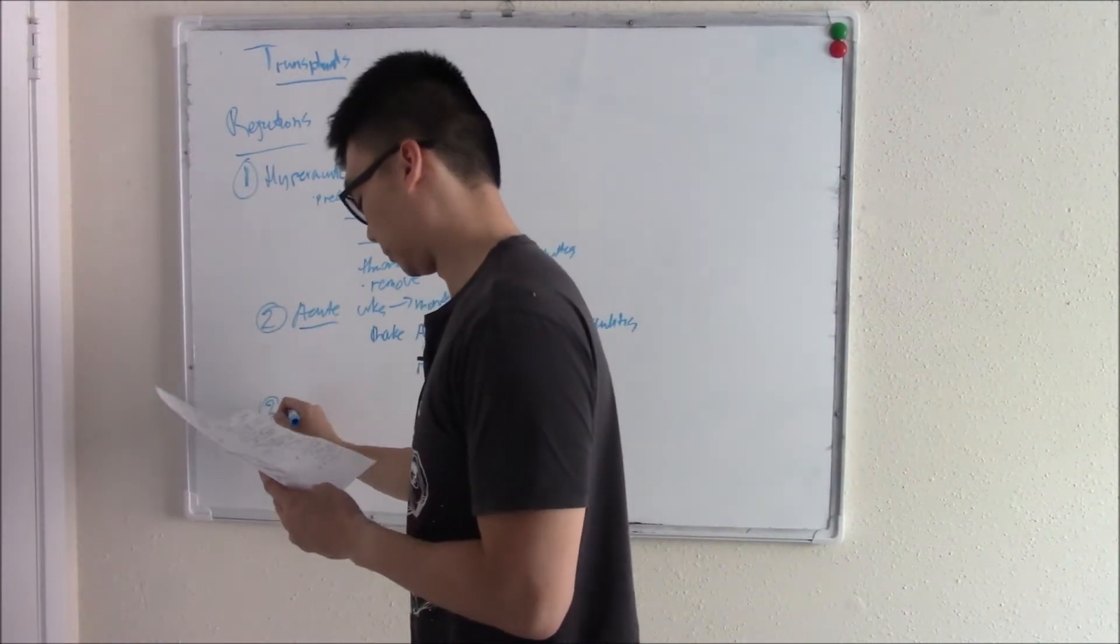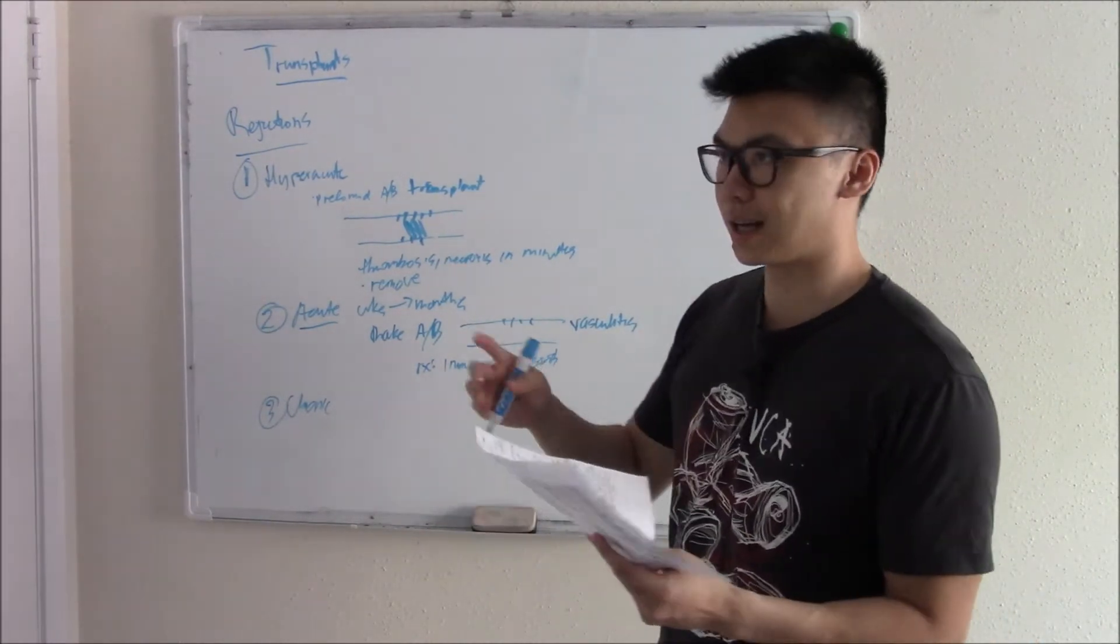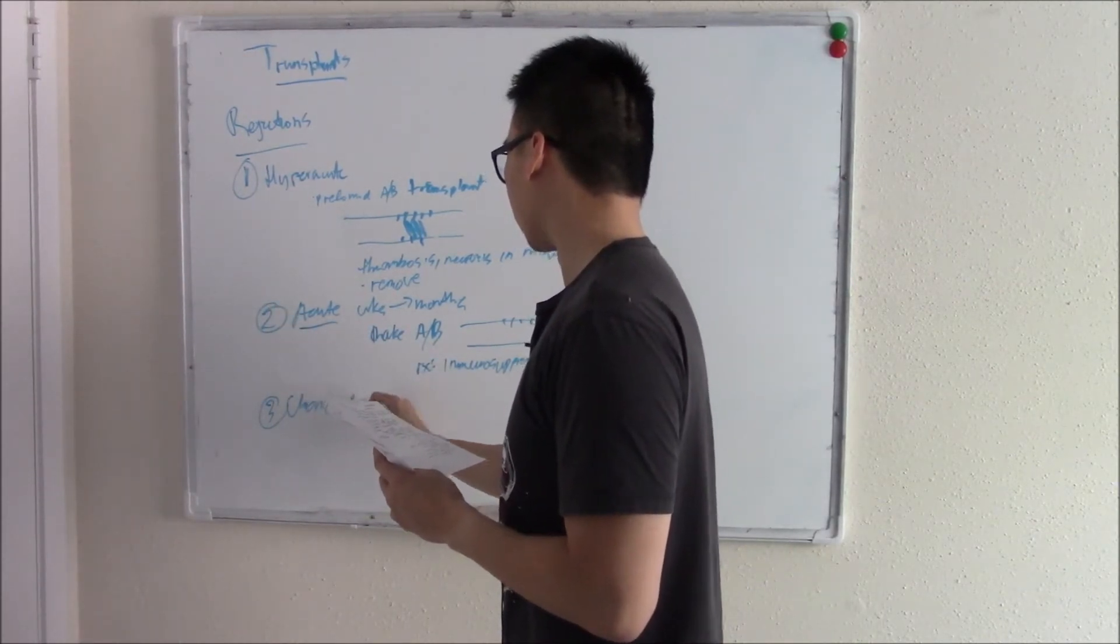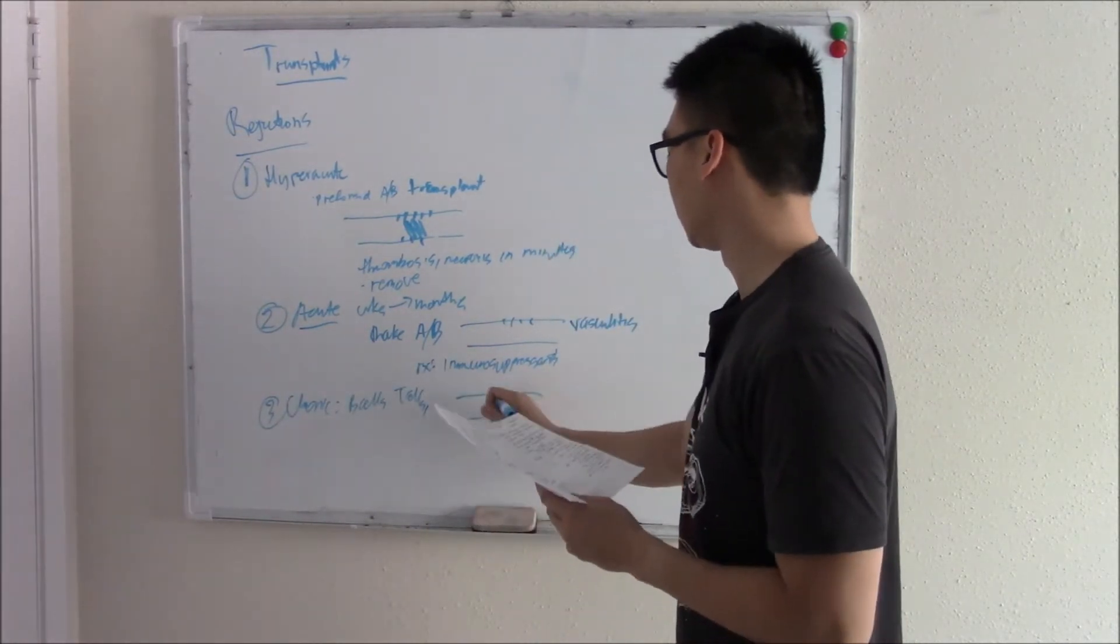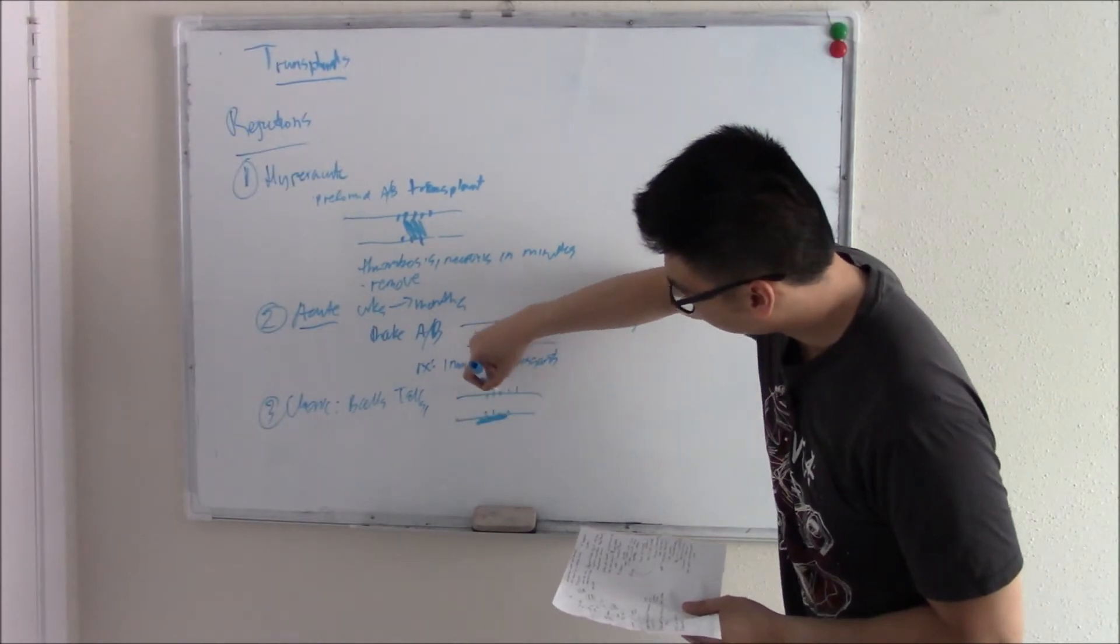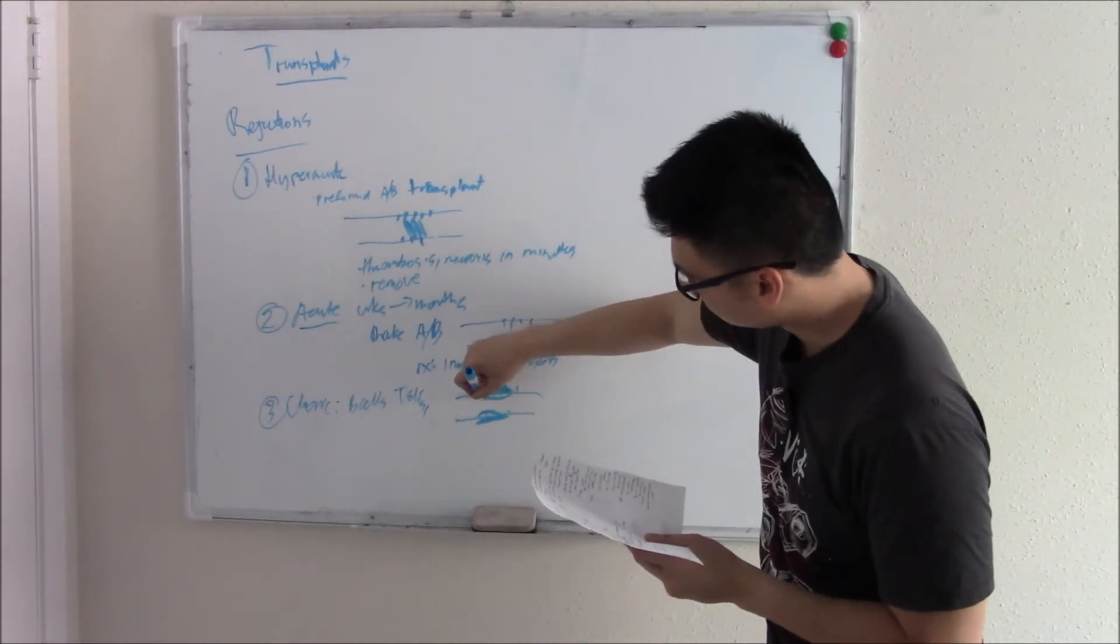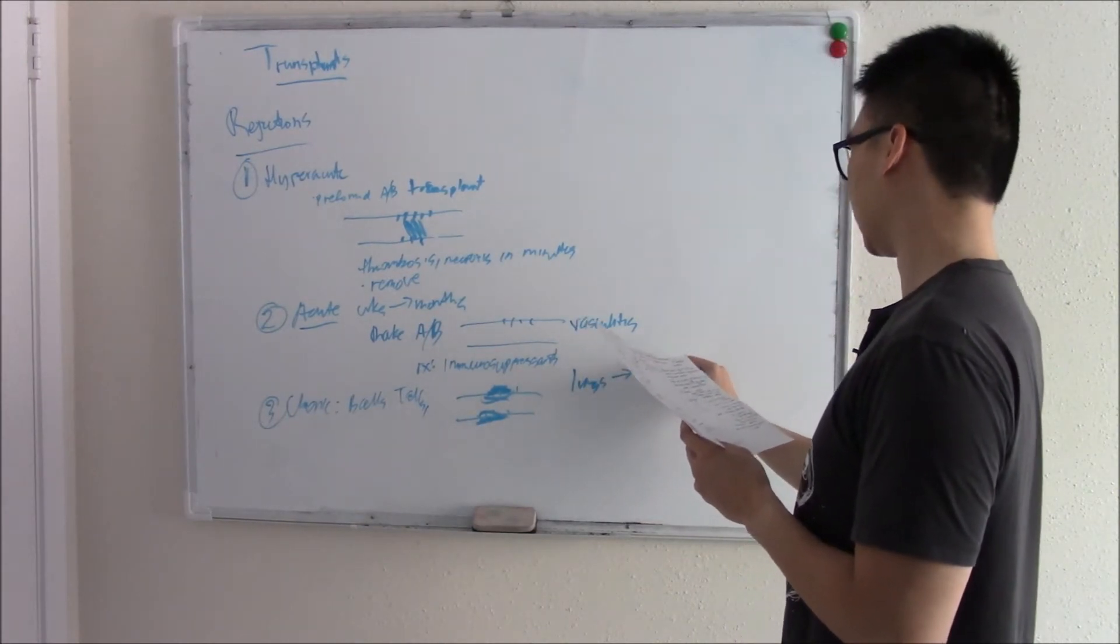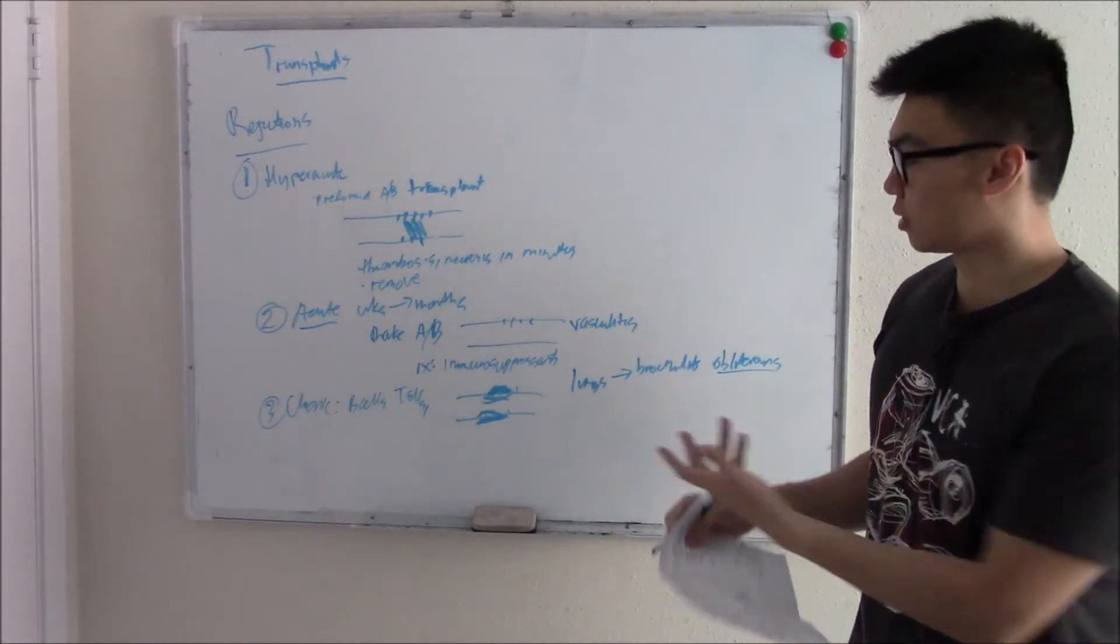Last you have chronic rejection. This is the same thing as acute, it just takes a little bit longer. So instead of weeks to months, you might have months to years. Same players - you have your B cells, you might also have some T cells, but you get inflammation of your vessels, scarring, fibrosis. Your smooth muscles might hypertrophy, they kind of brace against all that scarring. The fibrosis narrows your lumen. In your lungs, we call that bronchiolitis obliterans.